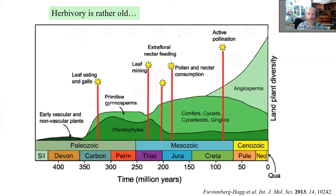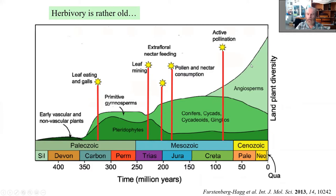Before we discuss current ecosystems, we should realize that plant-herbivore interaction is ancient. Not surprisingly, herbivores appeared very shortly after the first non-vascular plants, developing different lifestyles and ways of exploiting plants. From the fossil record, we can recognize leaf-eating and boring herbivores more than 300 million years old. Miners came a bit later, followed by pollen and nectar consumption with flowering plants, and further evolutionary improvements including specialized active pollination. All this happened before the huge diversification of angiosperms which created present-day ecosystems during the last 100 million years.